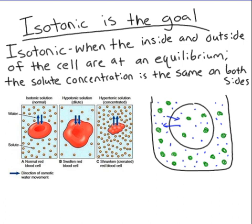Isotonic — another word for isotonic is just equilibrium. When the inside and the outside of the cell are at the same concentration, it's at equilibrium. Each cell is eventually going to hit isotonic, which means the same on the inside as on the outside. Water is going to continue to move in and out of the cell, but there's not going to be any net difference — the concentration is the same on both sides.